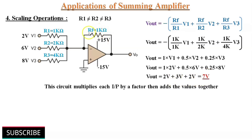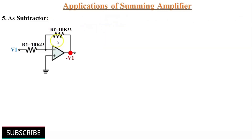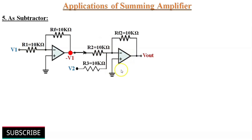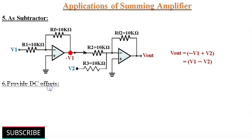A summing amplifier can be used to provide an output voltage equal to the difference of 2 voltages. The input voltage V1 is applied to a unity gain inverting amplifier, so Vout equals minus V1. If this output is again applied to a unity gain summing amplifier with another input voltage V2, the output from the second op-amp is Vout = minus(−V1 + V2) = V1 minus V2.